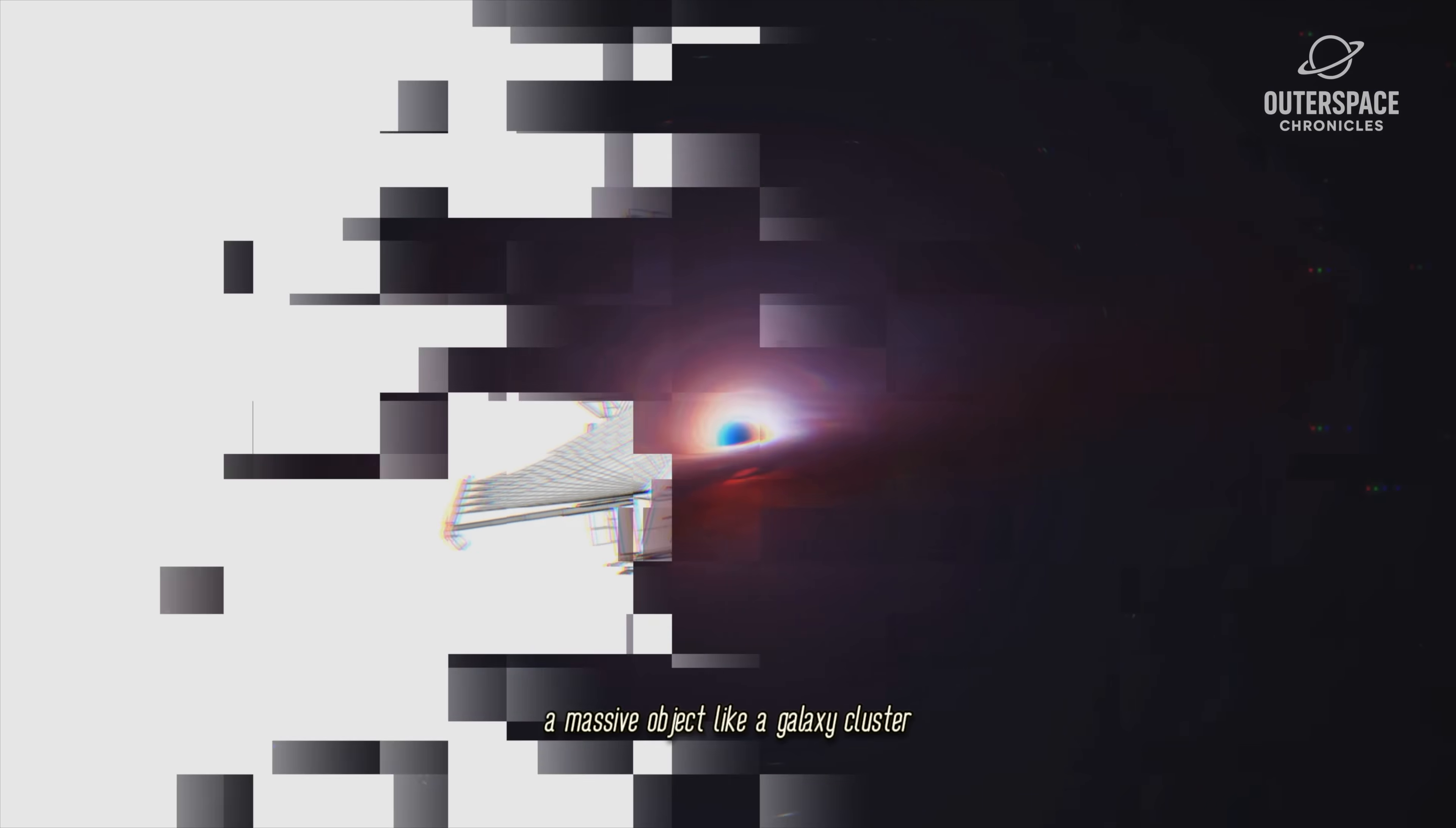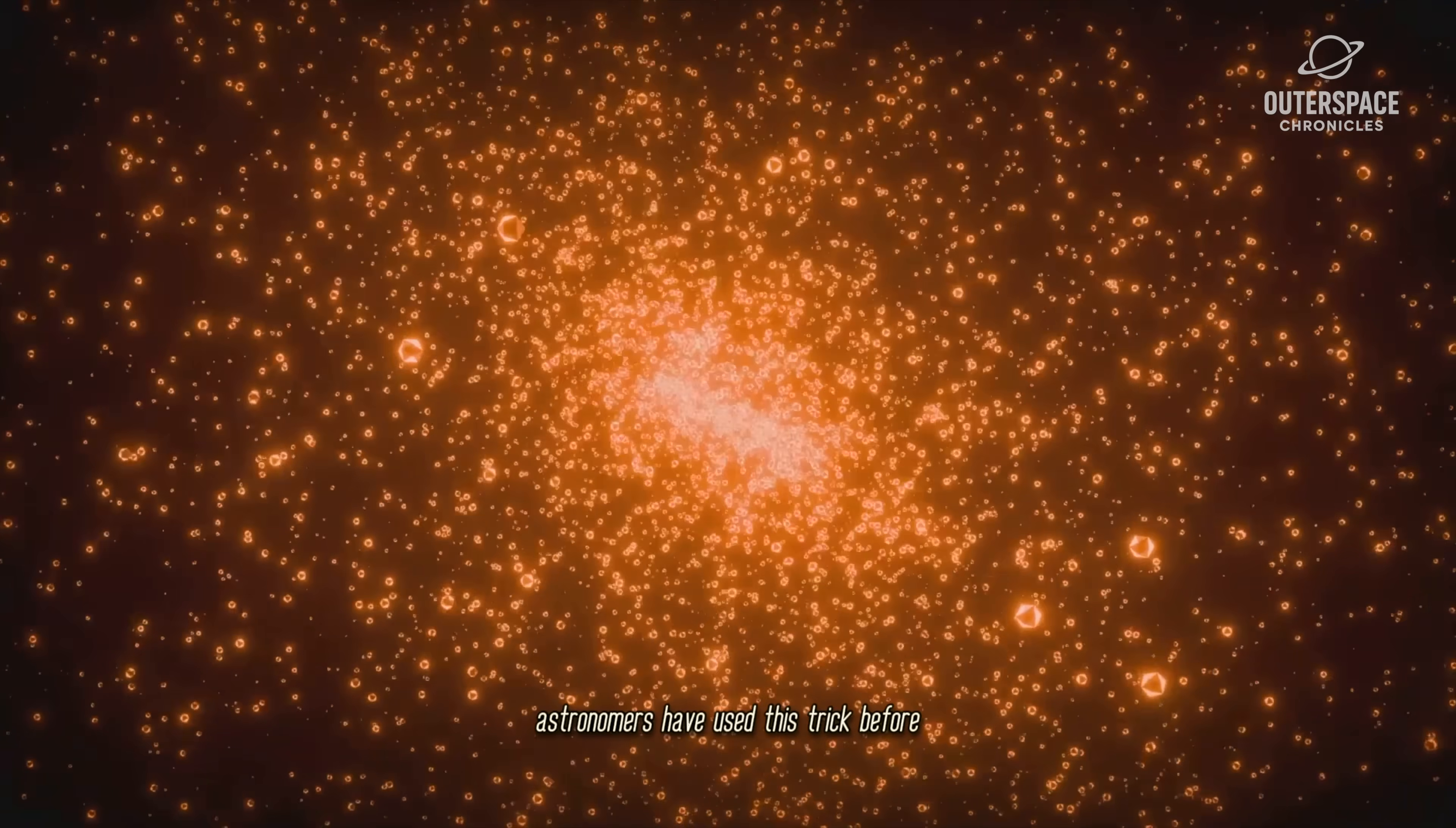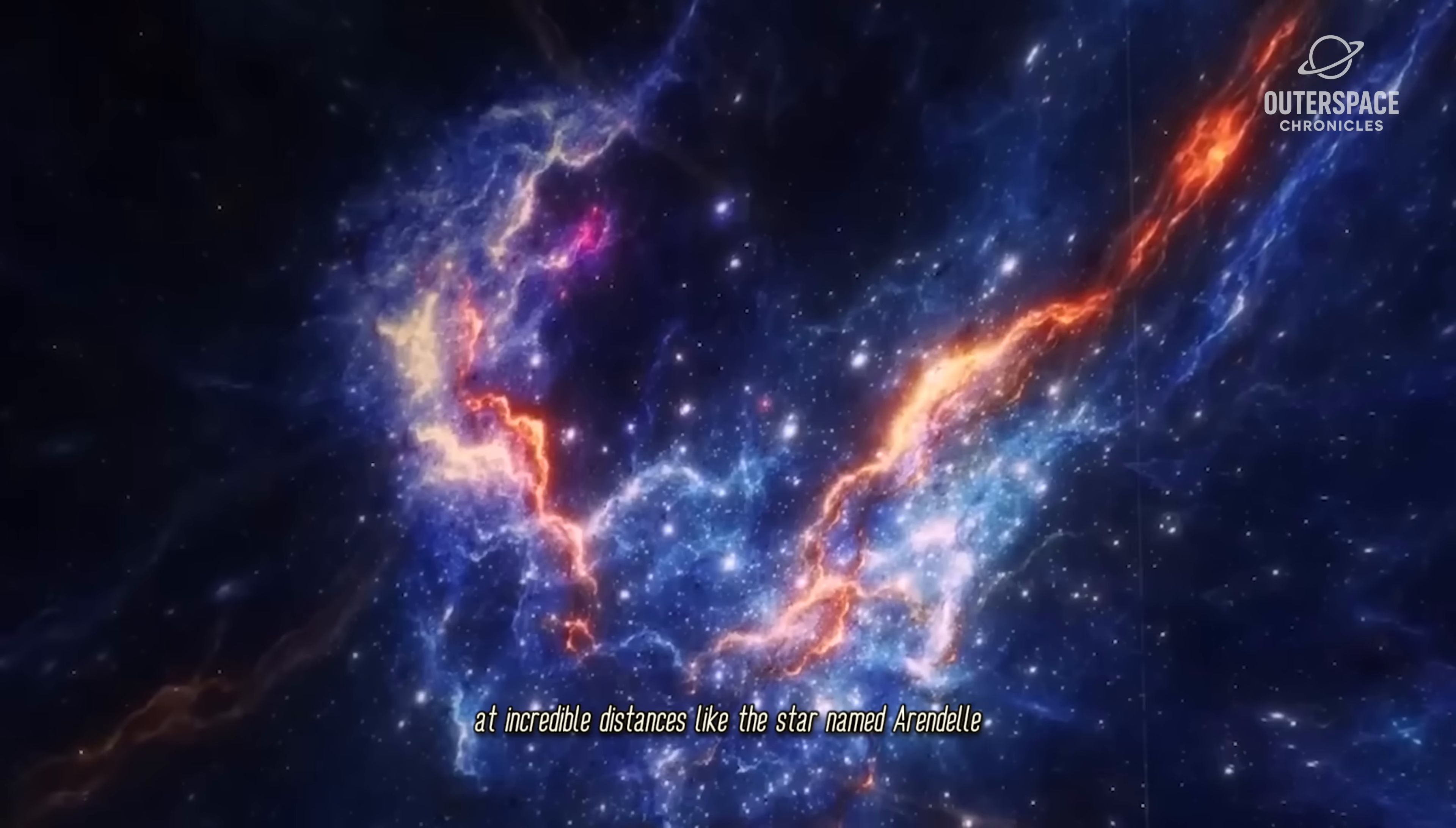A massive object, like a galaxy cluster, warps space-time so much that it bends and magnifies the light from something behind it, acting like a natural cosmic telescope. This can amplify light by thousands of times. Astronomers have used this trick before, but Webb's incredible sensitivity has taken it to a whole new level.